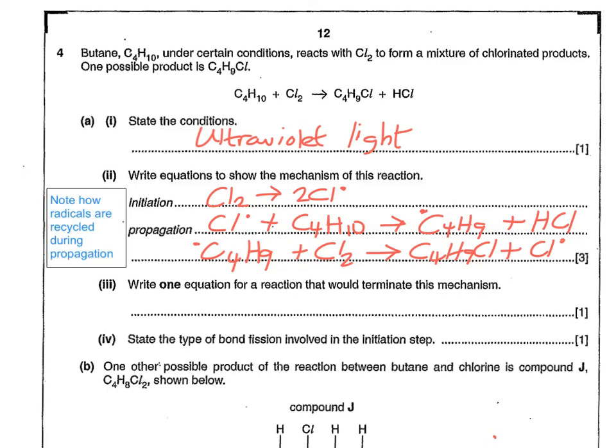So the next thing that we're asked to do is to write one possible equation. We don't have to write all of them, it just says one. So what you do is you choose two radicals that would go together to make a molecule. So that's one possibility. And obviously, the type of bond fission involved in the initiation is homolytic, like we said a few minutes ago.